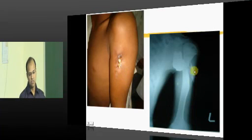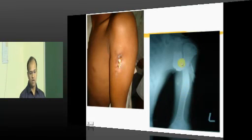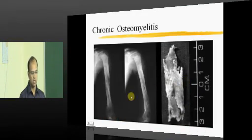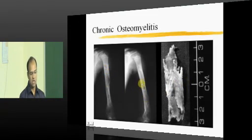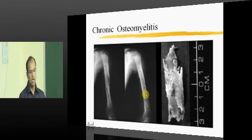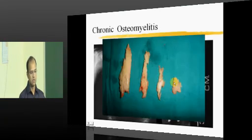In this chronic osteomyelitis picture, the whole diaphysis has become sequestrated because of the raised tension within the bone during the acute osteomyelitis phase. Once this sequestrated bone is removed, it looks like a tubular structure. These are the classical features of chronic osteomyelitis seen on imaging and clinical examination.